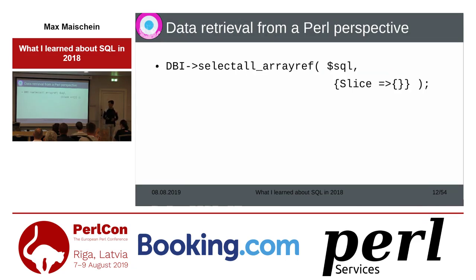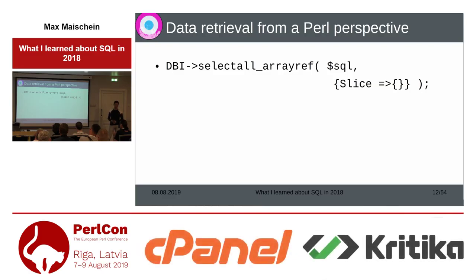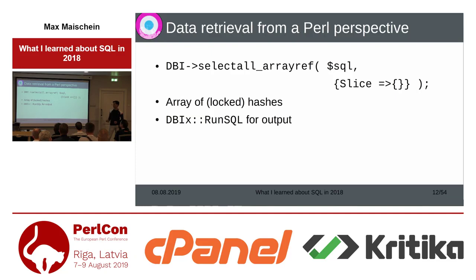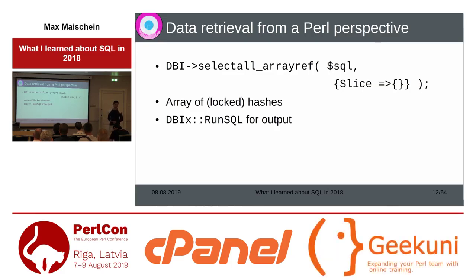On the Perl side of things, basically the only statement I use is from the DBI module — selectall_arrayref — and then I fetch all the rows as hashes. That's basically all I do from the Perl side. I get back an array of locked hashes, and I use a module by me, DBIx::RunSQL, for output of these hashes as a nice table. All the logic lives in the SQL statement and not in Perl code.